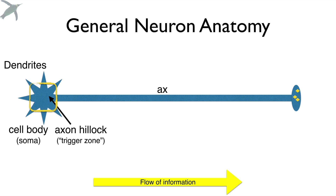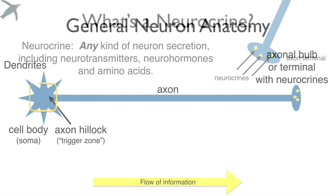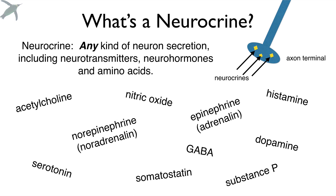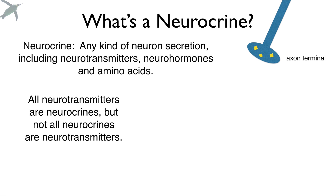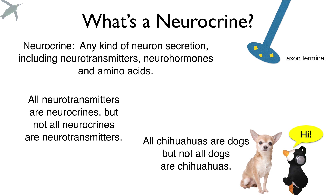If the cell fires, the signal travels down the axon, which carries information away from the cell body. At the axon terminal, there are chemicals called neurocrines. Students often ask about this — neurons release many molecules, not just neurotransmitters, so neurocrine is a more general, hierarchical term. All neurotransmitters are neurocrines, but not all neurocrines are neurotransmitters — it's like saying all chihuahuas are dogs, but not all dogs are chihuahuas.